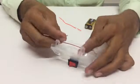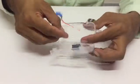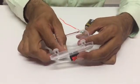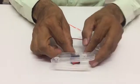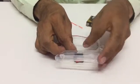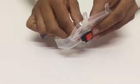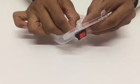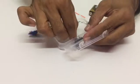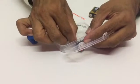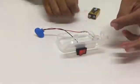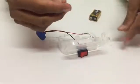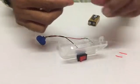Take the black wire of the battery connector, insert it in one hole of the switch and fix it. Now take another wire.